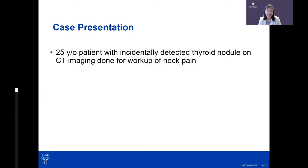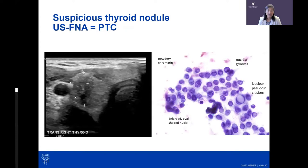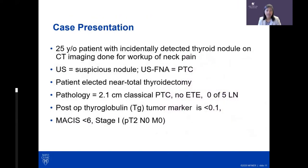A 25-year-old patient had an incidental thyroid nodule found on CT for workup of neck pain. Ultrasound showed a suspicious nodule — darker than normal thyroid, with calcifications, irregular borders. Fine needle aspiration revealed classic papillary thyroid cancer features: pseudo-inclusions, grooves, and altered nuclei. The patient underwent near-total thyroidectomy confirming a 2.1 centimeter papillary thyroid cancer.